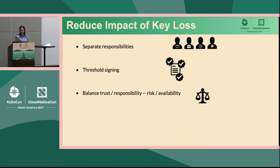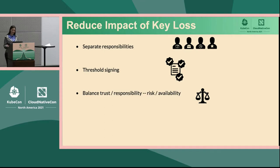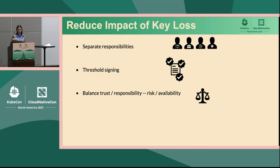TUF also reduces the impact of key loss through a couple of mechanisms. It separates responsibilities so that no single role or key is responsible for signing all the different content — one key has one responsibility and another key has another. So if any one of these keys is compromised, it only compromises that one responsibility, which in most cases isn't enough to convince someone to install malware. For additional protection, each of these roles can also have a threshold of keys. So you don't just have one key signing a piece of content — you could have multiple different keys required to sign the same piece of content, and they should all agree on what's in that content. When they're all verified, you can see that it's not just one entity, which may be compromised, that thinks this is true — it's also various other entities as well.